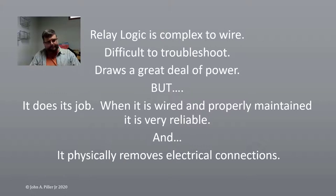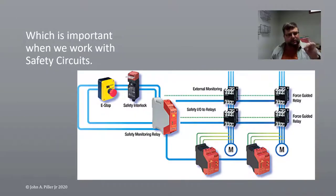Relay logic is complex to wire. It's difficult to troubleshoot. It draws a lot of power. It is energy hog, but it does its job. When it's wired properly and properly maintained, it's reliable. There are reasons for it. And most assuredly, it physically removes the electrical connection. This is important because we use it in safety circuits. NFPA 79 talks about three types of stop. There's a stop zero, stop one, and stop two. Stop two is just to turn off and turn back on, but stop one and zero. Those are emergency stop circuits. And depending on why you do a one or a zero, that's a different topic. But what that does is physically removes the power from the actuators. And that's relay logic. Relay logic exists even in the most advanced machine. And that's because it's in the safety circuit.